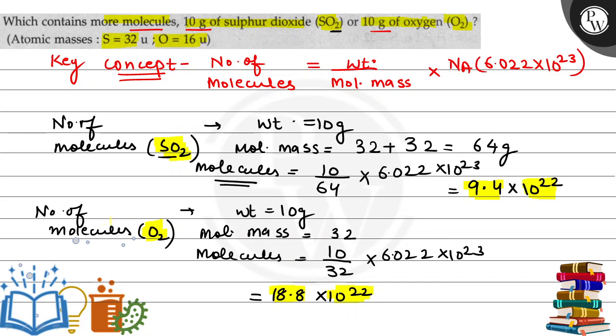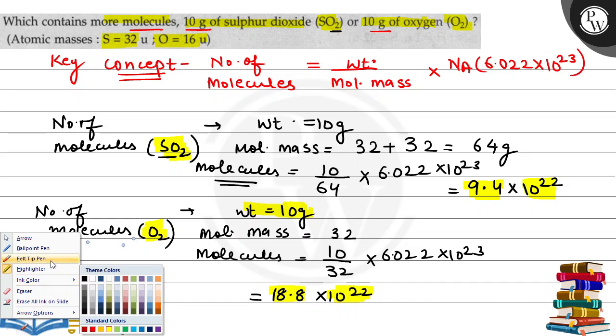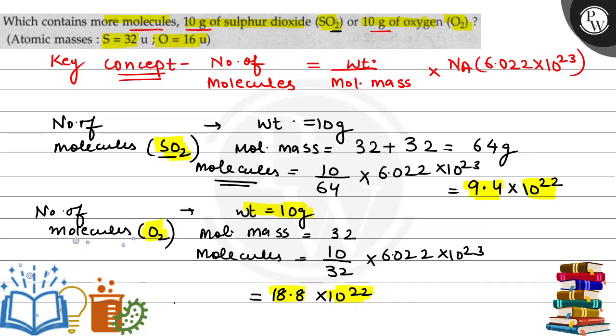we can clearly see that the number of molecules in 10 grams of oxygen is more compared to 10 grams of sulfur dioxide. This means the number of atoms in 10 grams of oxygen is greater.